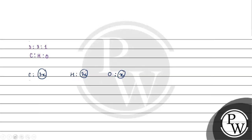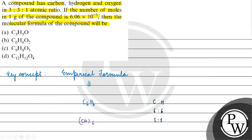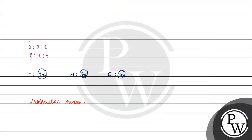Now if we talk about molecular mass — molecular mass will be equal to mass divided by number of moles, because we know number of moles equals mass divided by molecular mass. So molecular mass equals 1 gram divided by 6.06×10⁻³ moles, which gives us 1000/6.06 = 165 grams per mole.